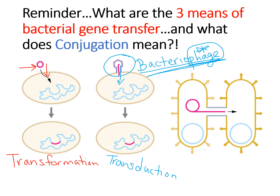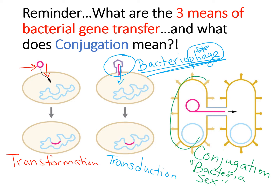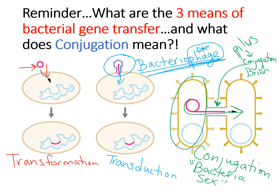The last one, which we're going to focus on today, is conjugation — the one I always tell you to think of as bacteria sex. In this case, you have one bacterial cell transferring DNA to a second bacterial cell. The structure involved is referred to as two things: it starts out as a pilus, or pili, which then becomes the conjugation bridge. Conjugation means the transfer of DNA from one bacterial cell to another — make sure you write that down.